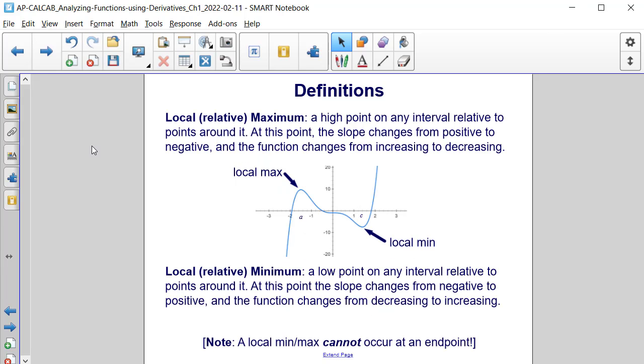And here are some definitions that we've basically discovered. A local or relative maximum is a high point on any interval relative to points around it. At this point, the slope changes from increasing to decreasing.